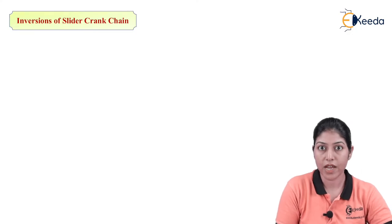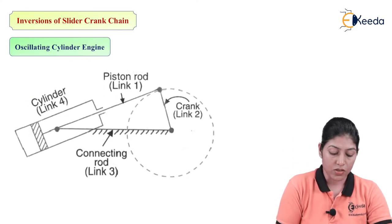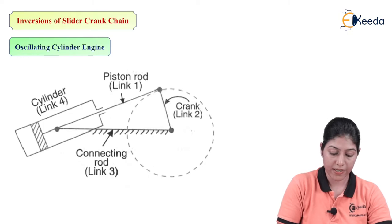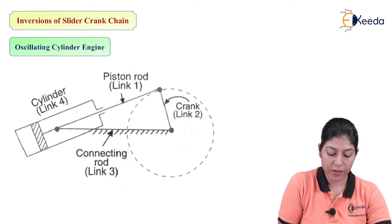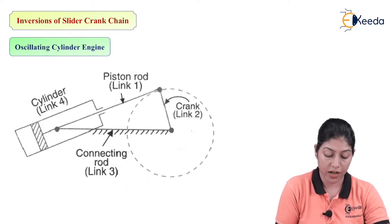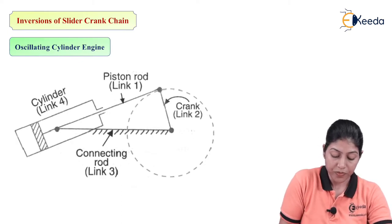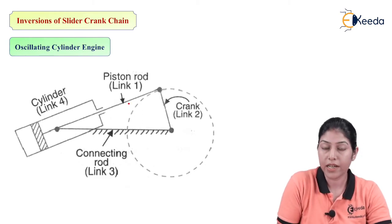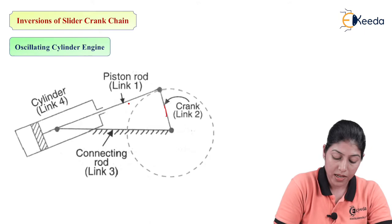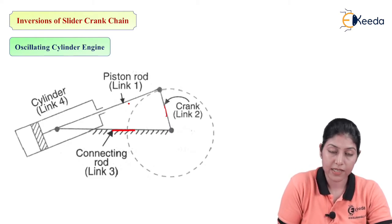The next inversion of slider crank mechanism is the oscillating cylinder engine. In this engine, reciprocating motion is converted into rotary motion. Here the cylinder actually oscillates — it is not a fixed link. There are four links in the oscillating cylinder engine: crank, piston rod, cylinder, and connecting rod. The crank is considered as the rotary link, and the connecting rod is taken as the fixed link.